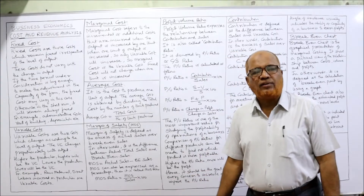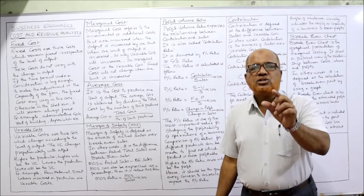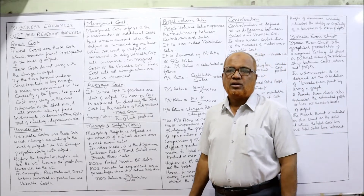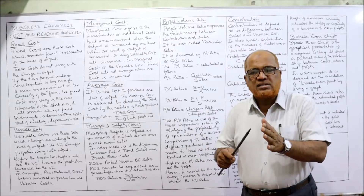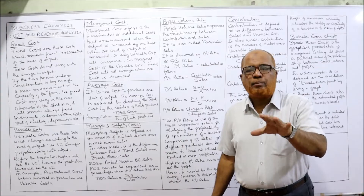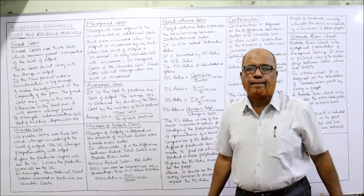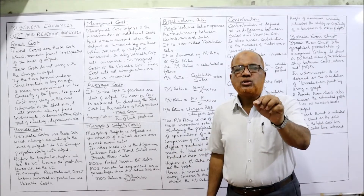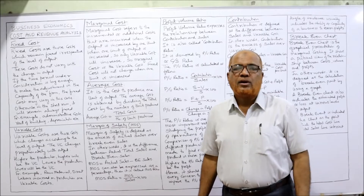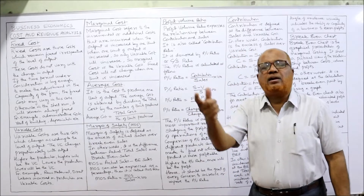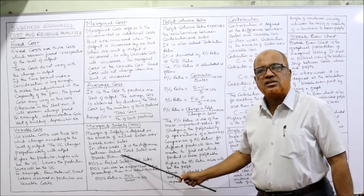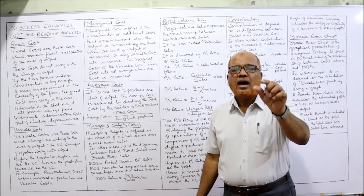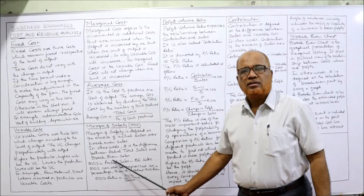Margin of safety is a very important and frequently asked concept in examinations. Margin of safety is the excess of actual sales over breakeven sales. At breakeven sales, there is no profit and no loss. For example, if the breakeven point is 10 lakh rupees, and actual sales are 15 lakh rupees, then the margin of safety is 5 lakh rupees — the difference between actual sales and breakeven sales.